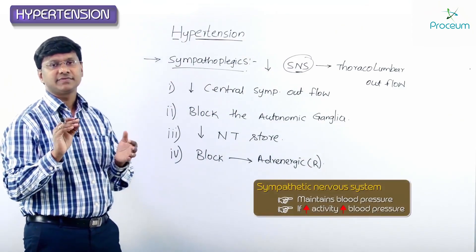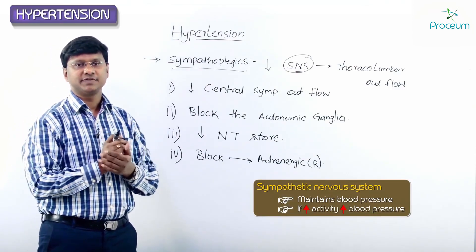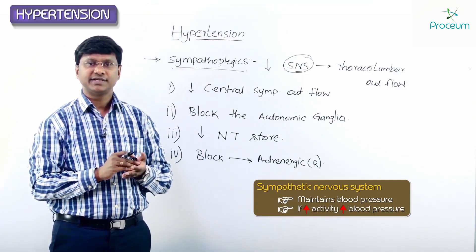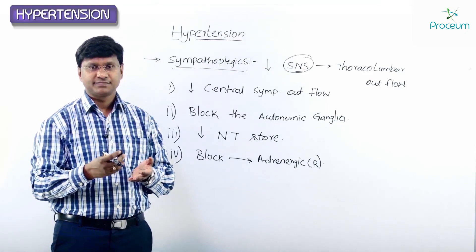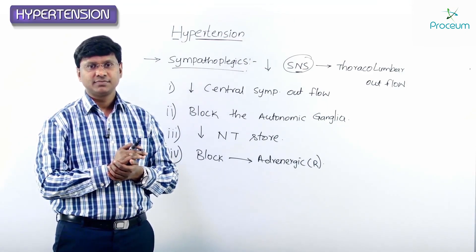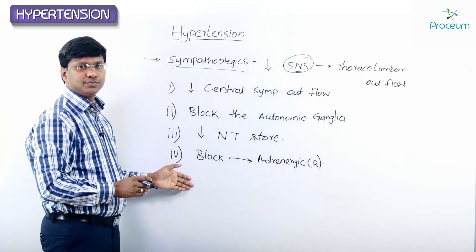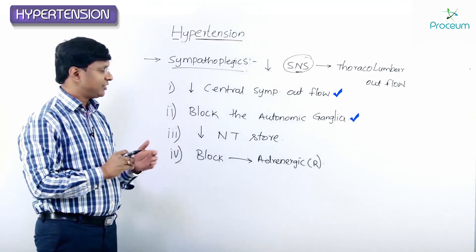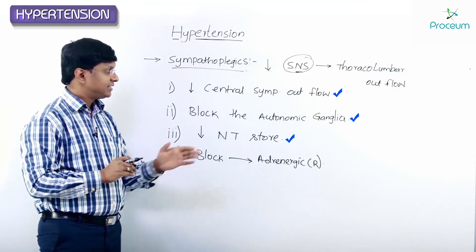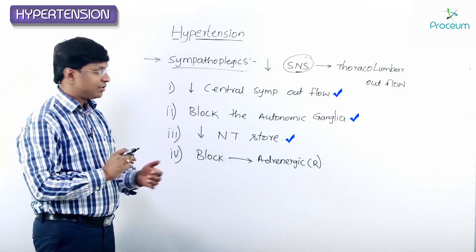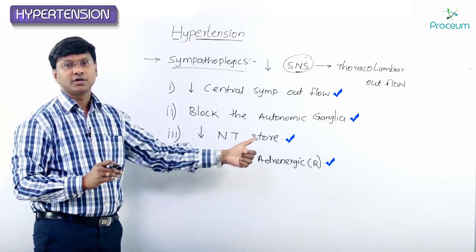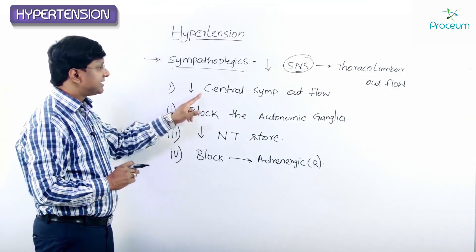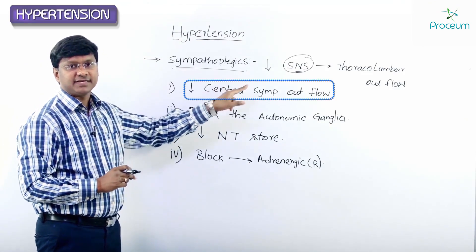The sympathetic nervous system plays an important role in regulating blood pressure. To attenuate sympathetic nervous system activity, we can: (1) decrease the central sympathetic outflow, (2) block the autonomic ganglia, (3) decrease the neurotransmitter store, and (4) block the adrenergic receptors. Next, let me discuss the drugs that decrease the central sympathetic outflow.